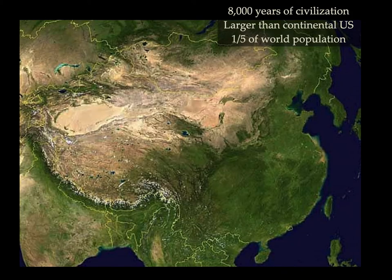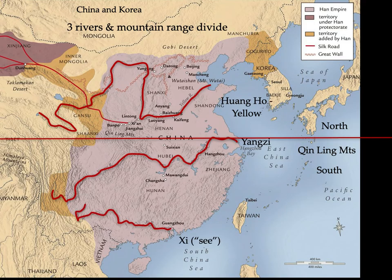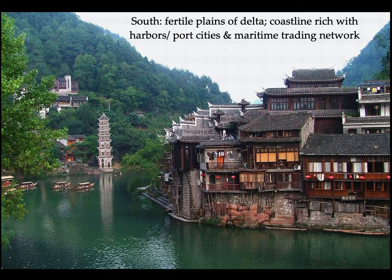The history of China is immense, representing about 8,000 years of civilization. It is on a land mass larger than the continental U.S. and represents one-fifth of the world population. The area is divided into different regions by three rivers and a mountain range. The southern region has greater rainfall, which is appropriate for agriculture, fertile plains, a coastline with rich harbors and port cities, and a maritime trading network.